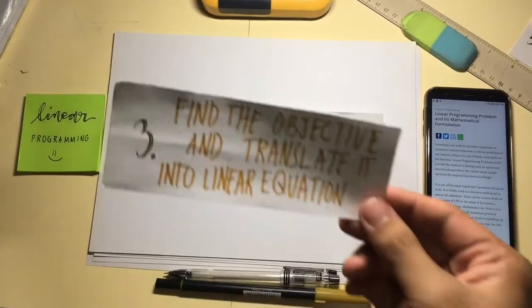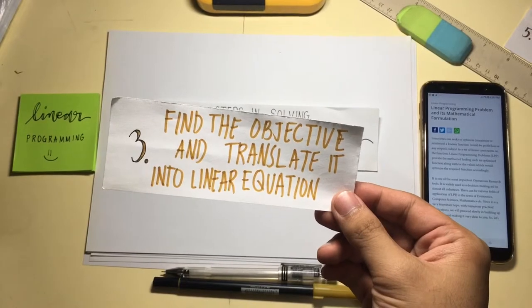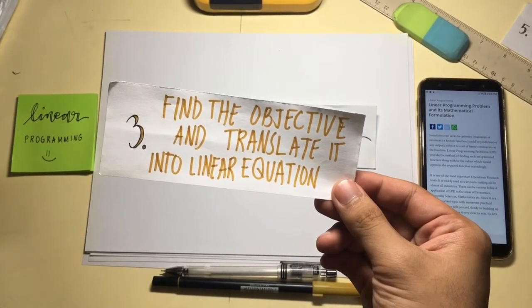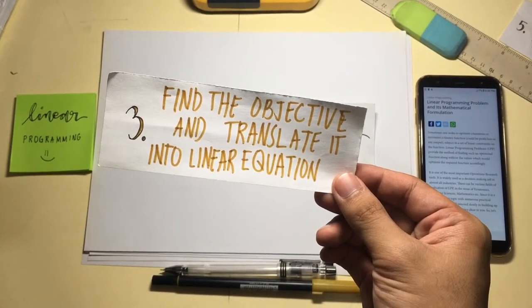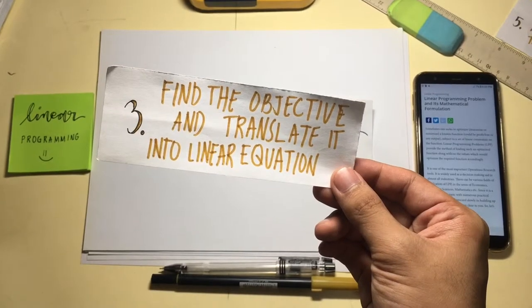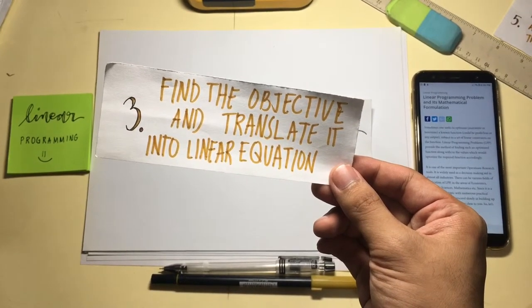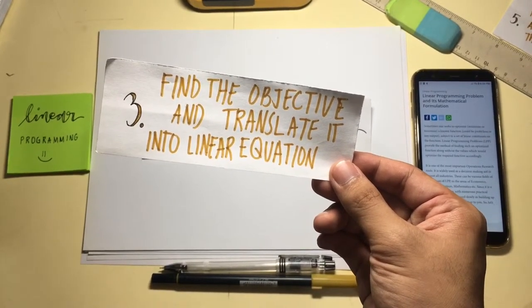Third step is to find the objective and translate it into a linear equation. This is the objective function or the things you want to optimize. In linear programming, we either maximize or minimize the objective.